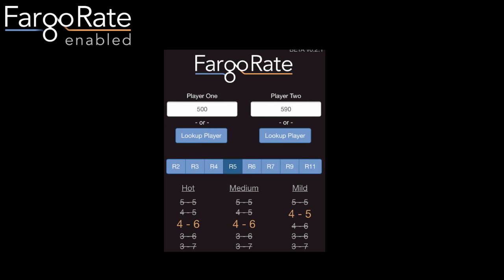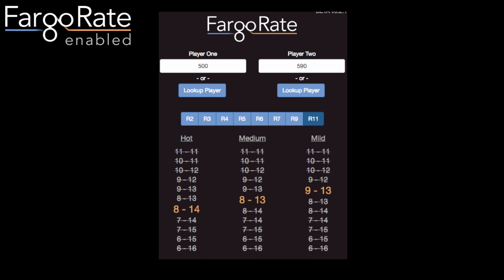Here's what it looks like using the fair match calculator with selected match charts. Entering the Goose's rating of 590 and the Rabbit's rating of 500, then selecting chart R5, you see the matchups 5-5, 4-5, 4-6, 3-6, and 3-7, and which one is selected according to hot, medium, and mild handicaps — this is the exercise we just went through. Here's another example using chart R11: the Goose and Rabbit would play 8-14 (a six-game spot) with hot handicaps, 8-13 (a five-game spot) with medium handicaps, and 9-13 (a four-game spot) with mild handicaps.